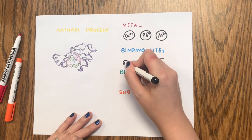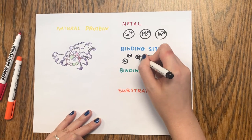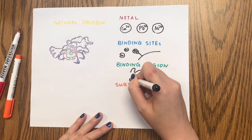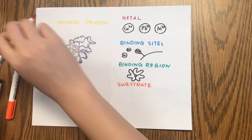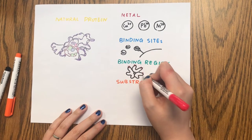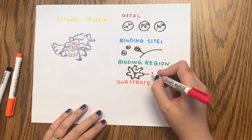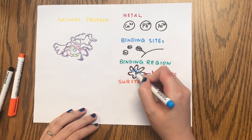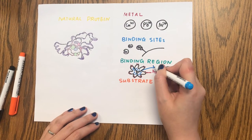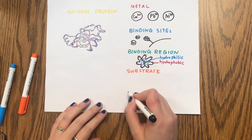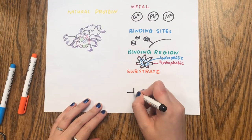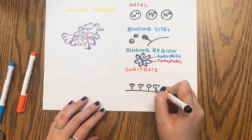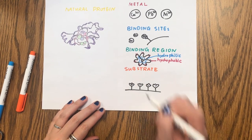Binding sites in our polymer system are some specific amino acid analogues. The design of our binding region is based on the ratio of hydrophilic to hydrophobic amino acids. Finally, the polymer substrate will self-assemble into a polymer membrane, which could remove trace metal ions.